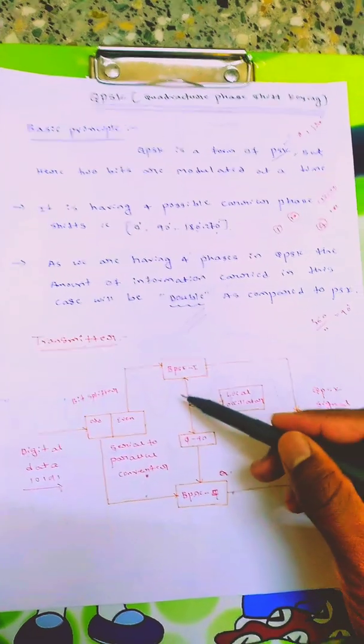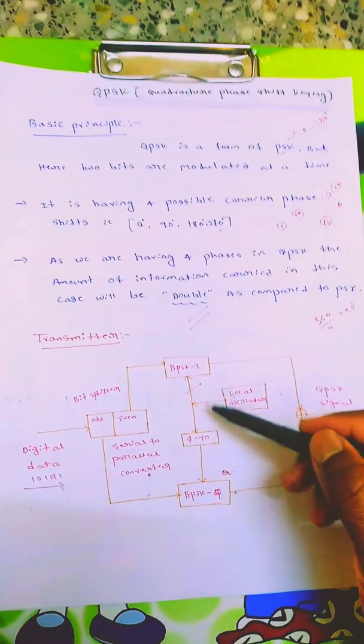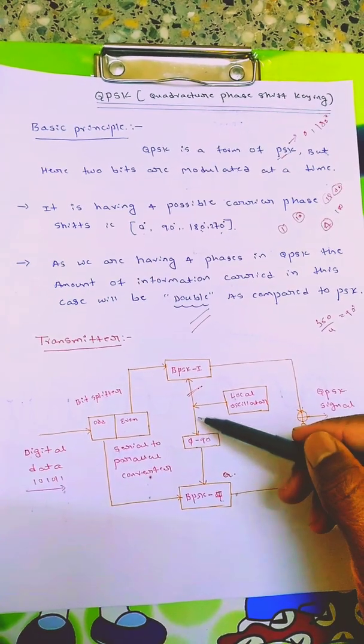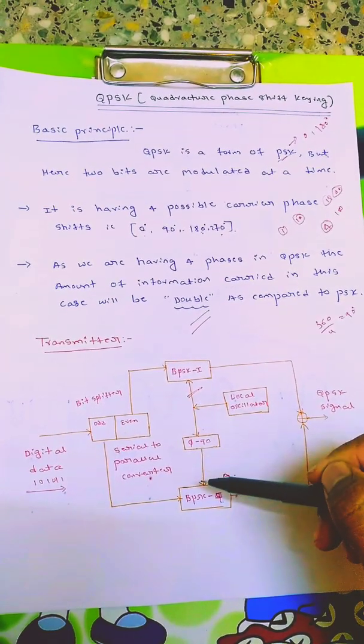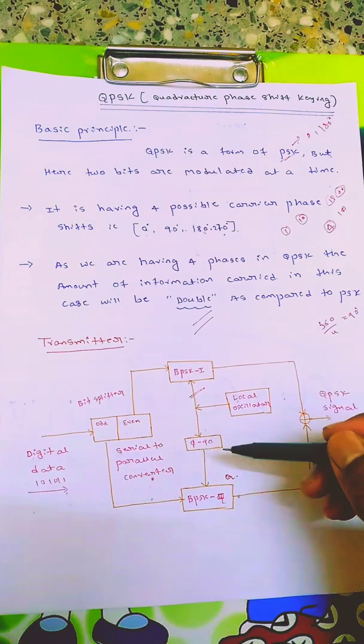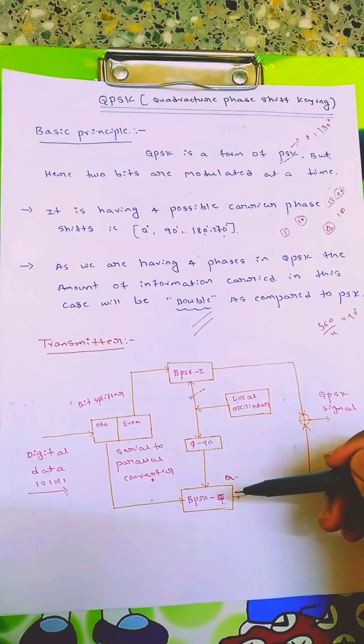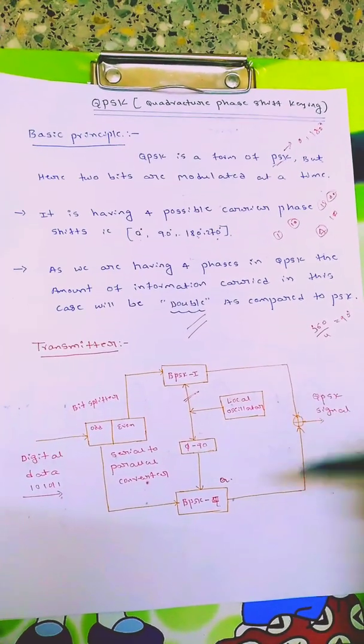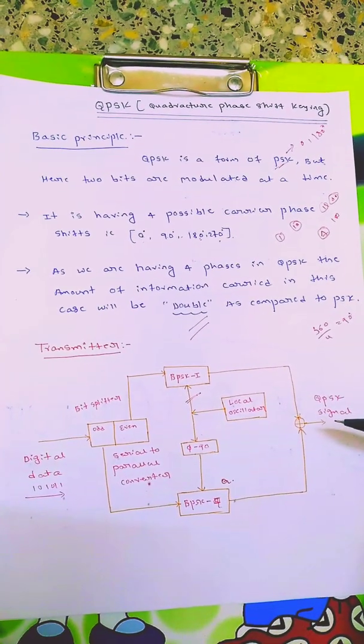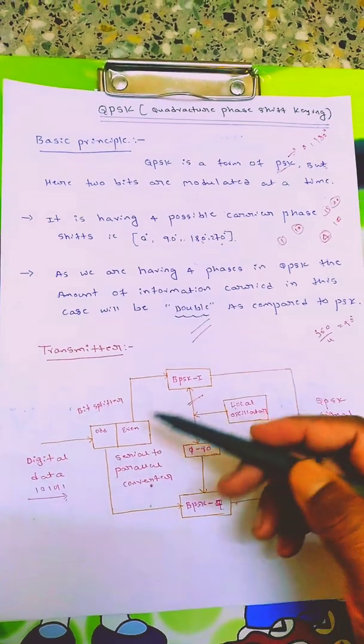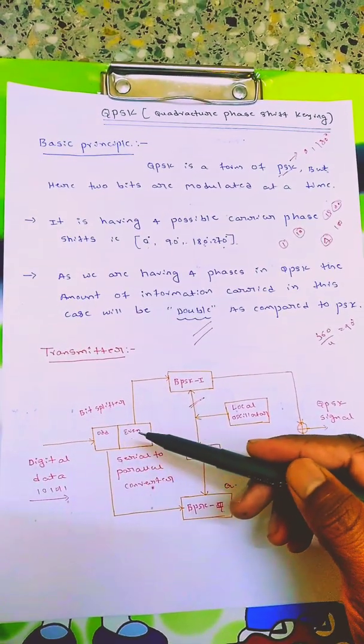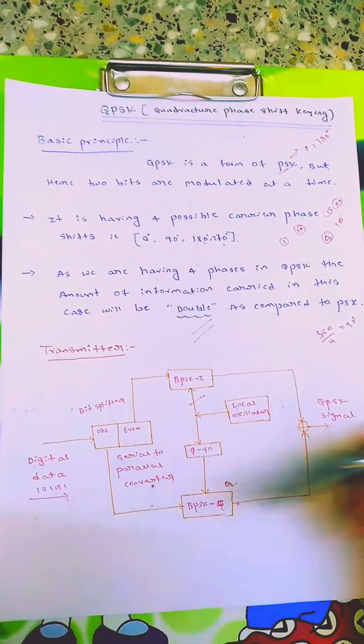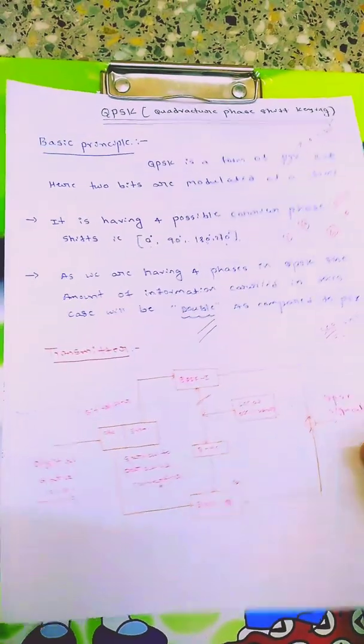Here also we can place the 90 degree phase shift, then we'd give the carrier directly to the other. Out of two channels, one should have 90 degree phase shift. Those two are combined here and a QPSK signal is formed. This is basically called a bit splitter, and the digital data is provided at the input.